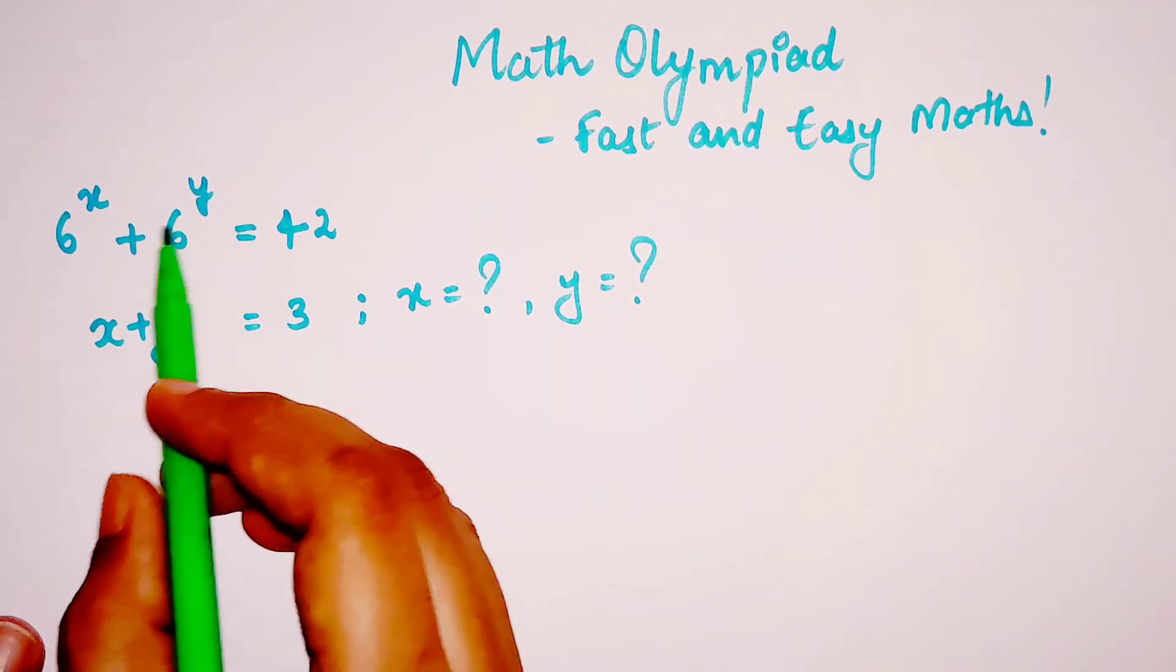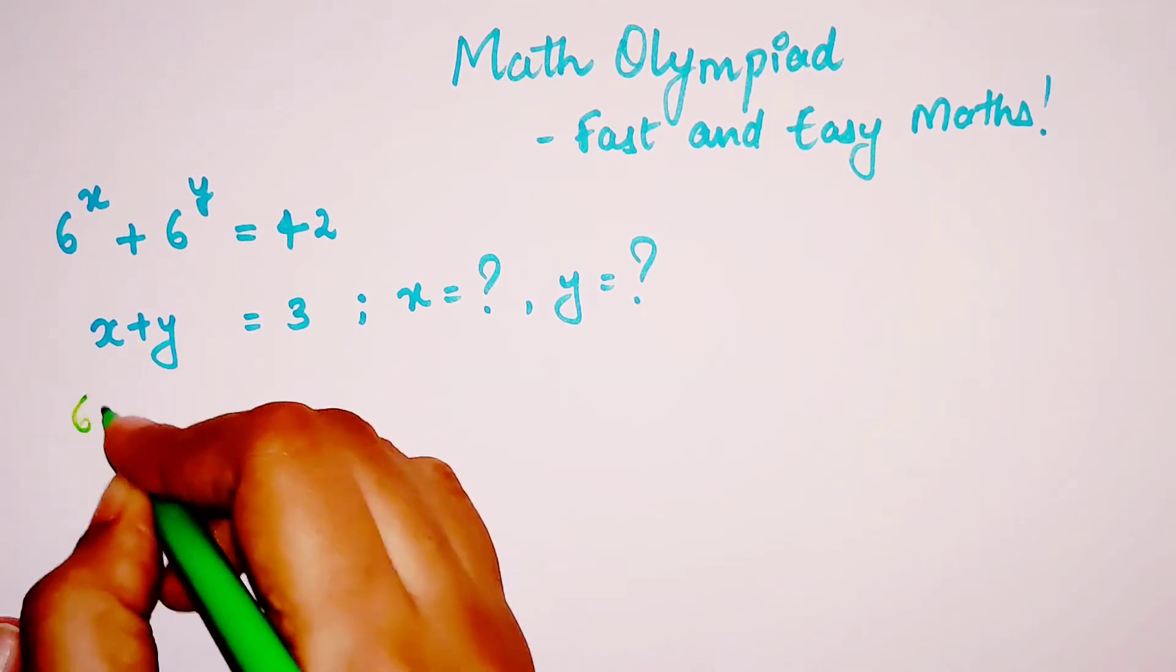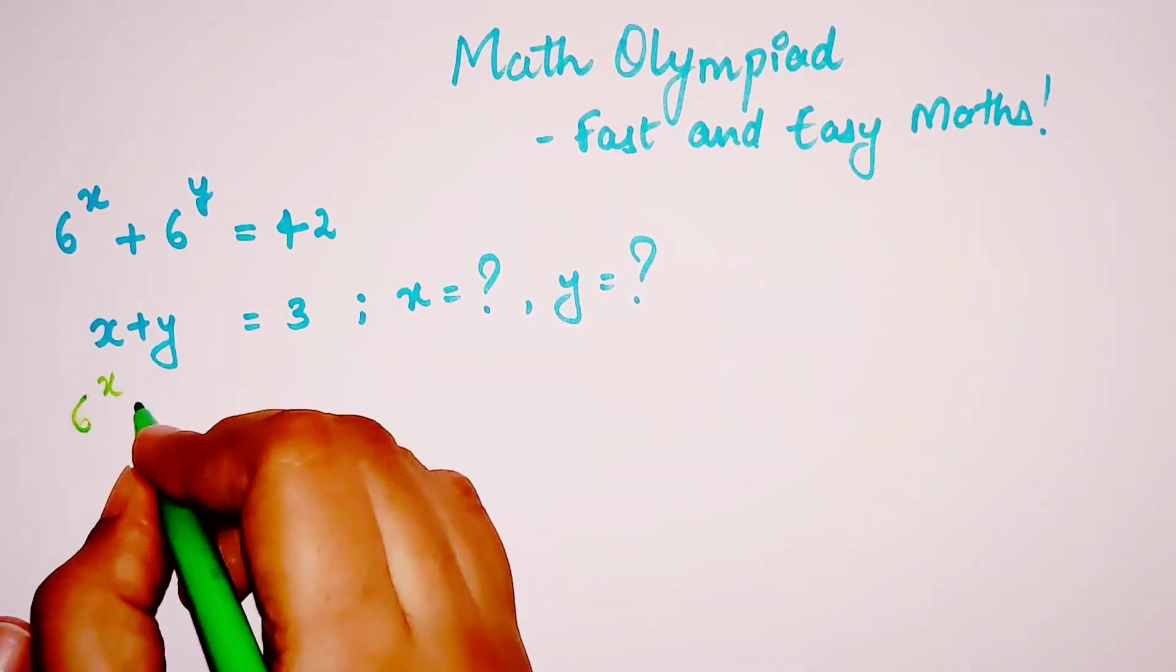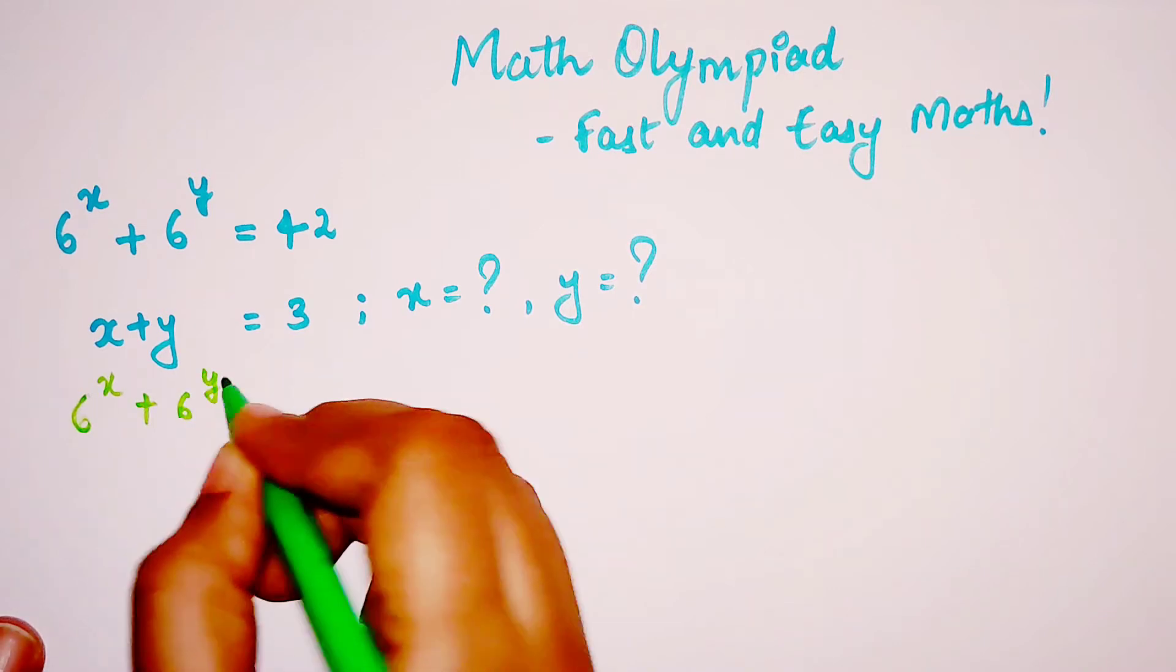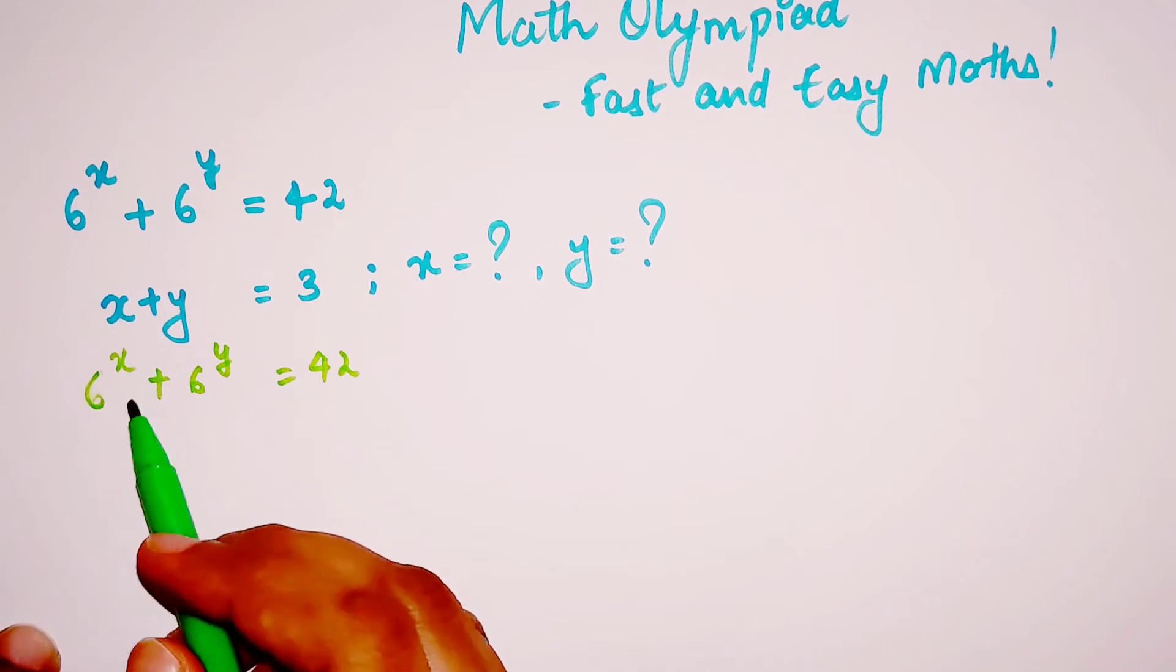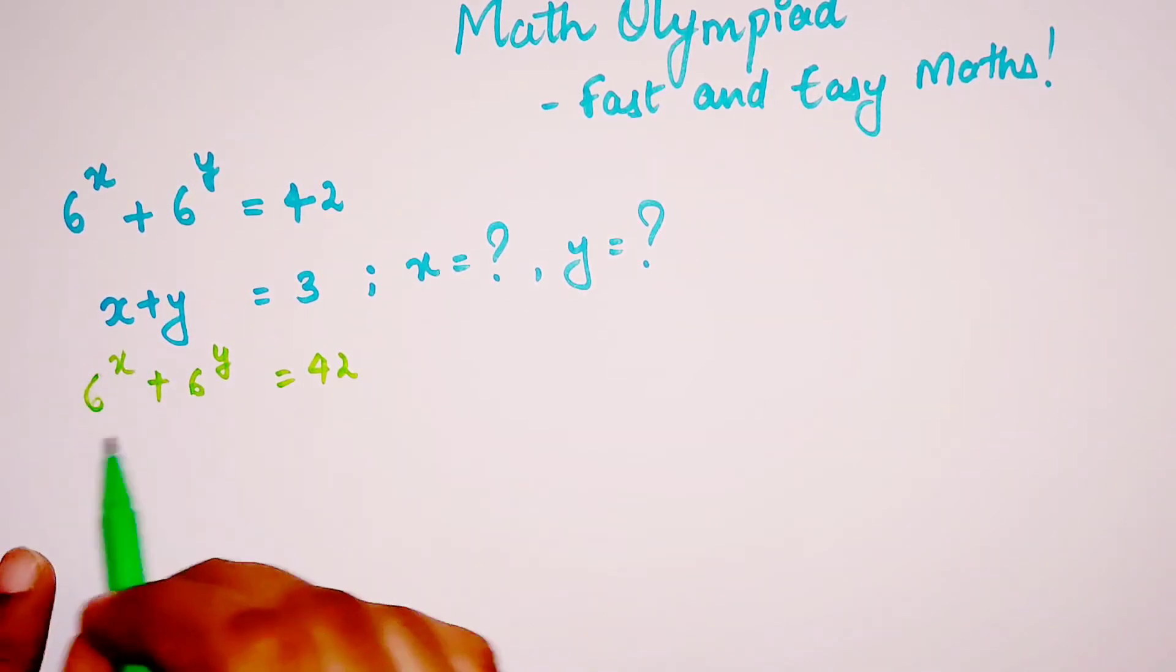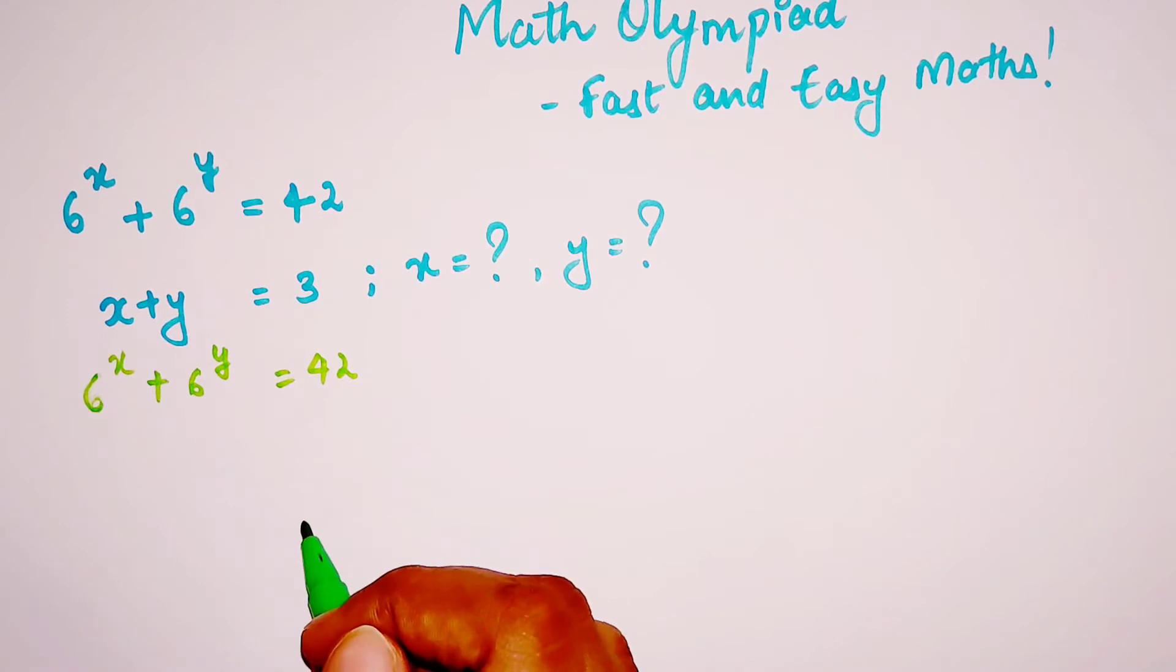Let's write this down. We have 6^x + 6^y = 42. Now, what we can do is try to convert this into a quadratic. How?